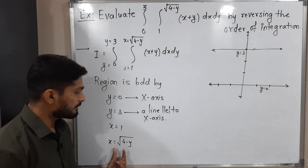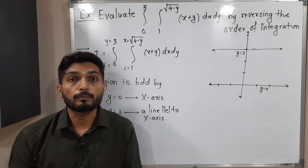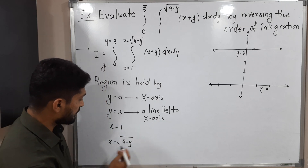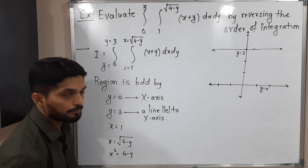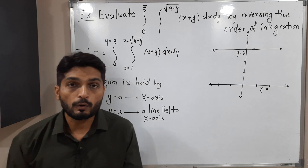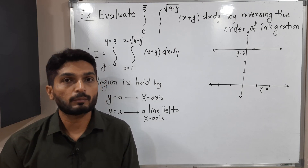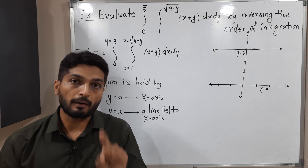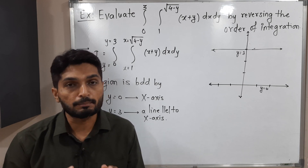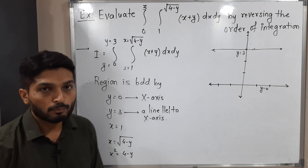Now we have a square root, so to remove it I will square both sides. We get x squared equals 4 minus y. The power of x is 2 and the power of y is 1, which means it represents a parabola.